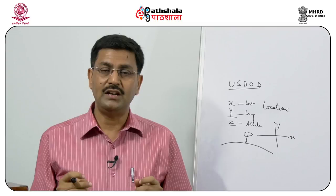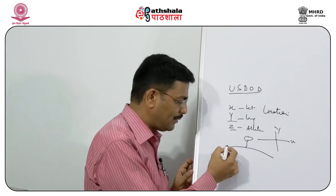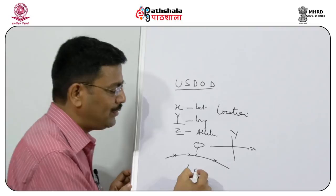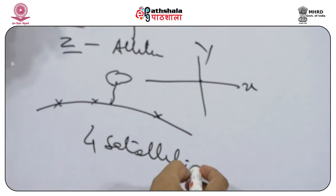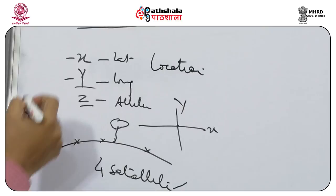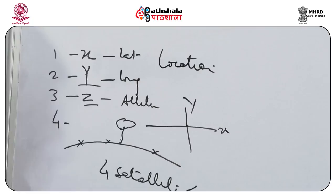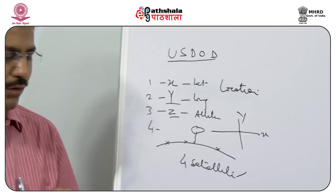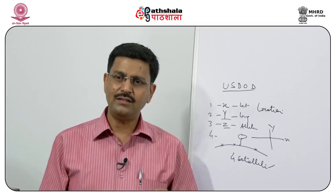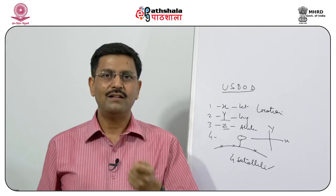In the space segment, if we stand on any part of the surface of the earth, we get signals from at least four satellites. I was talking about why four satellites: one satellite gives you the X dimension, another the Y, the third gives Z, and the fourth is to cross-check those values. Whether I stand in India — in Delhi, Bangalore, Madras — or in America or any part of the earth, we get at least four satellites locked.